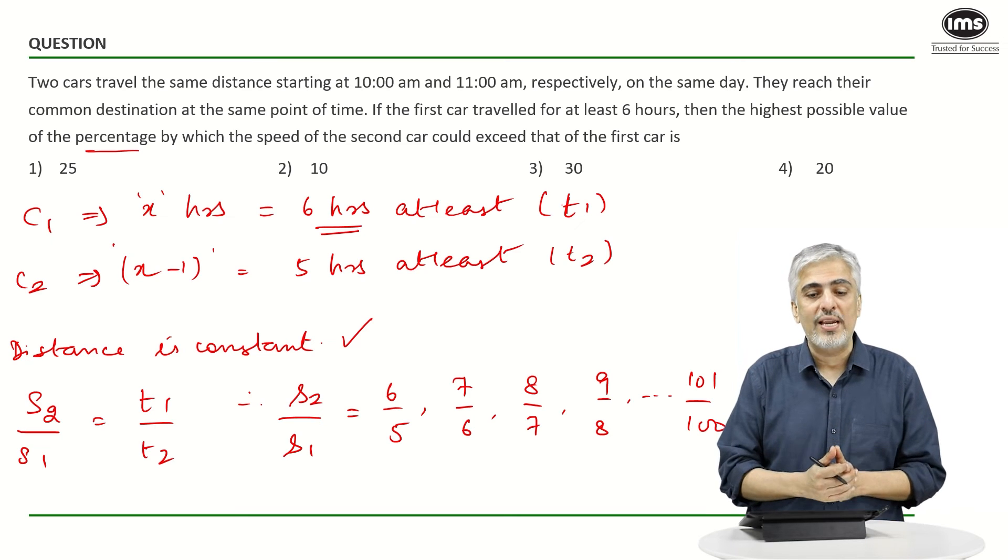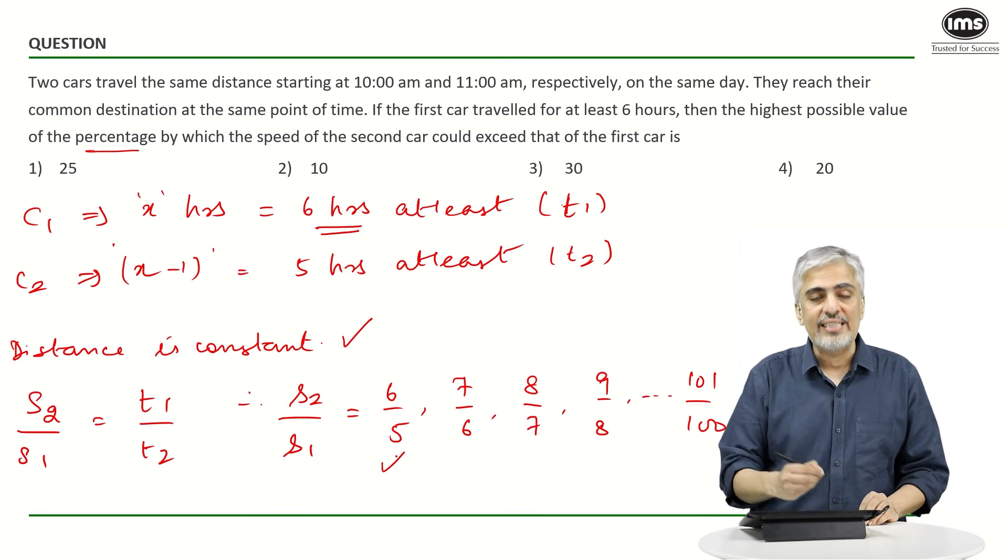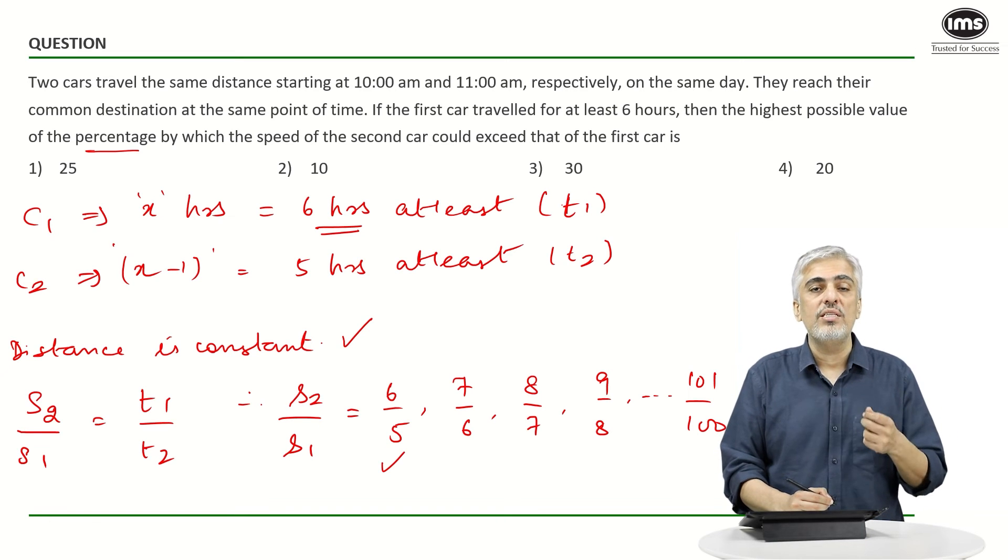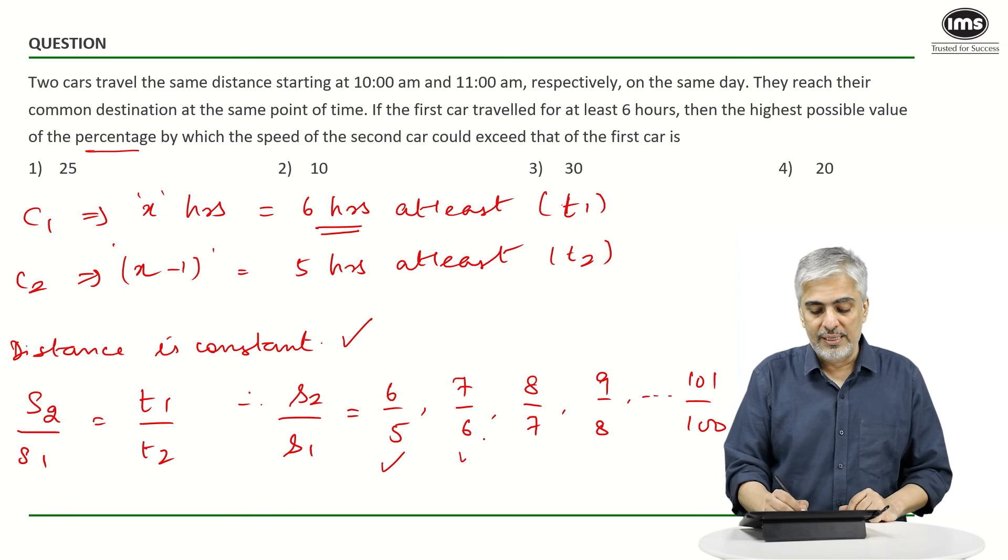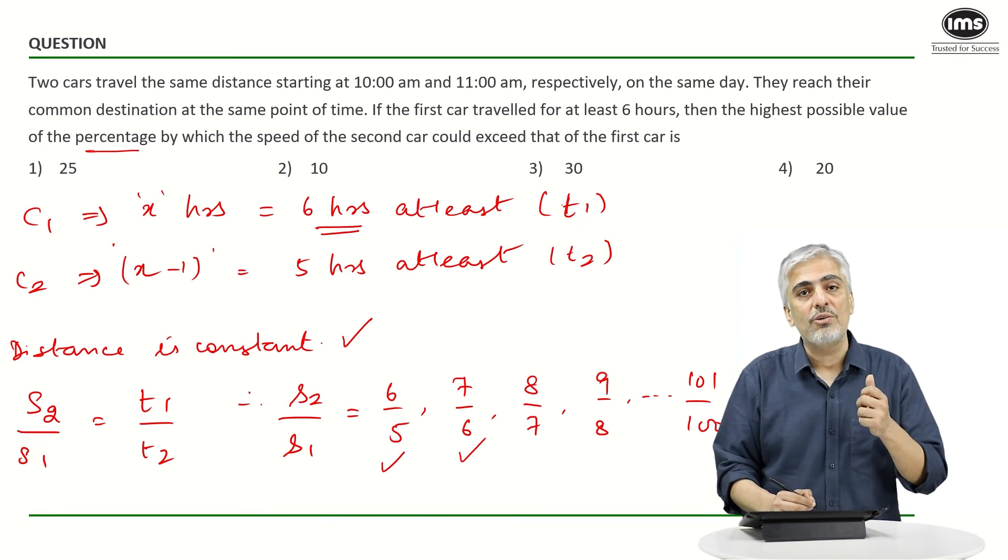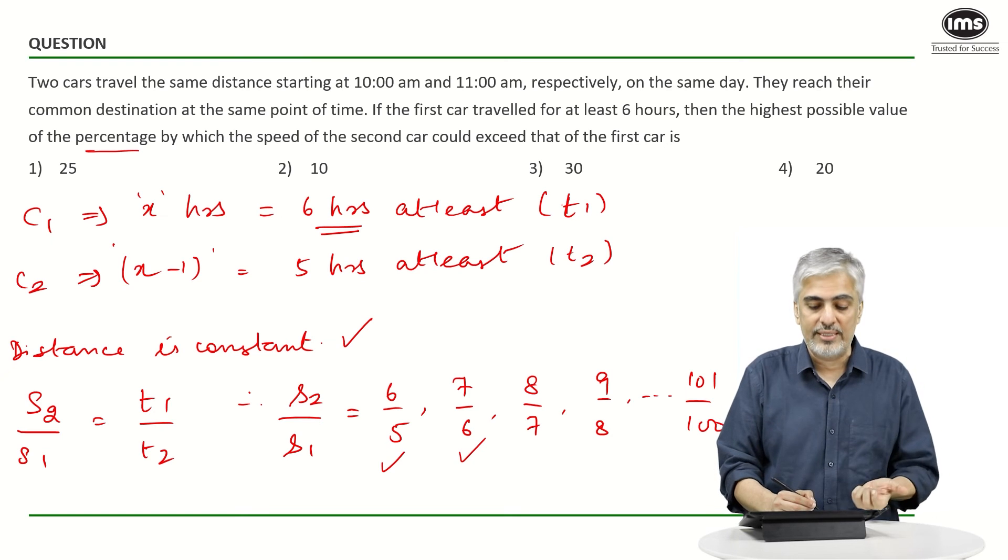So if you've learned your fractions and percentages well, you would have known that six upon five is 120 percent, which means car two is 20 percent more than car one. But seven upon six will be less than 20 percent. The extra part will be one upon six, which is 16.67 percent.